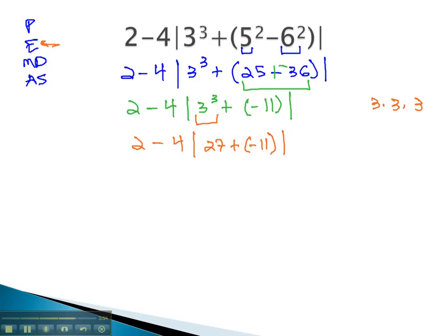And still working inside that absolute value, 27 plus negative 11, so we have 2 minus 4. Absolute value of, it's going to be positive. 27 minus 11 is 16, and now that that absolute value is done, now we can make it positive. Well, it already is positive, so we'll just change them to curved parentheses with the 16.